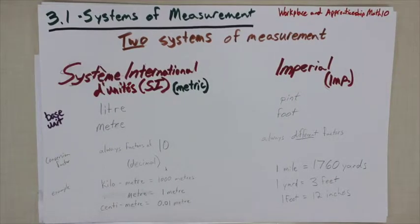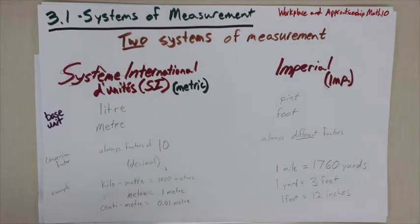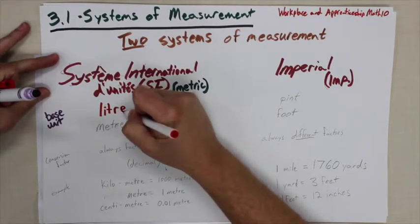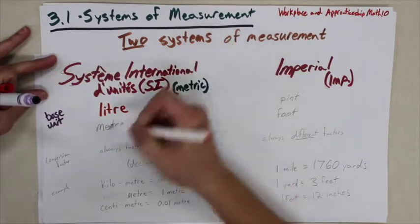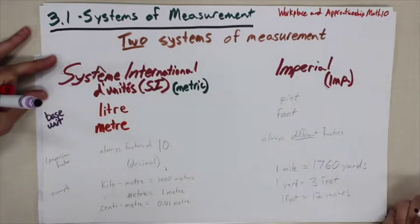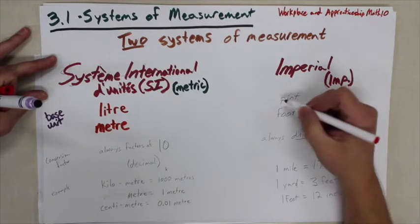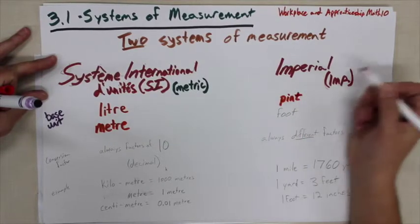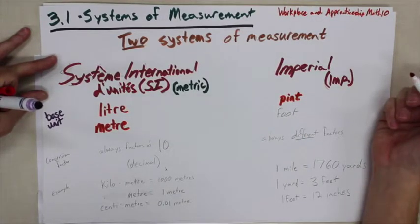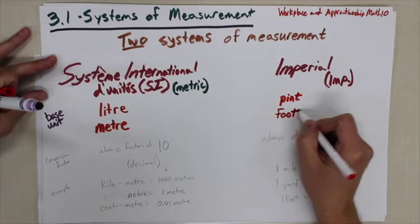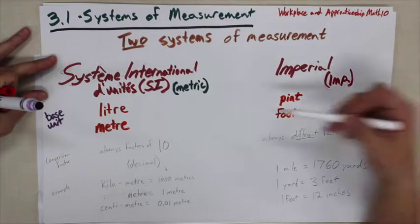In the SI system, we have a litre when measuring fluids, and a metre when measuring length. In the imperial system, when measuring fluids we use the pint, and when measuring length we use the foot. Everything else we measure is in reference to these base units.